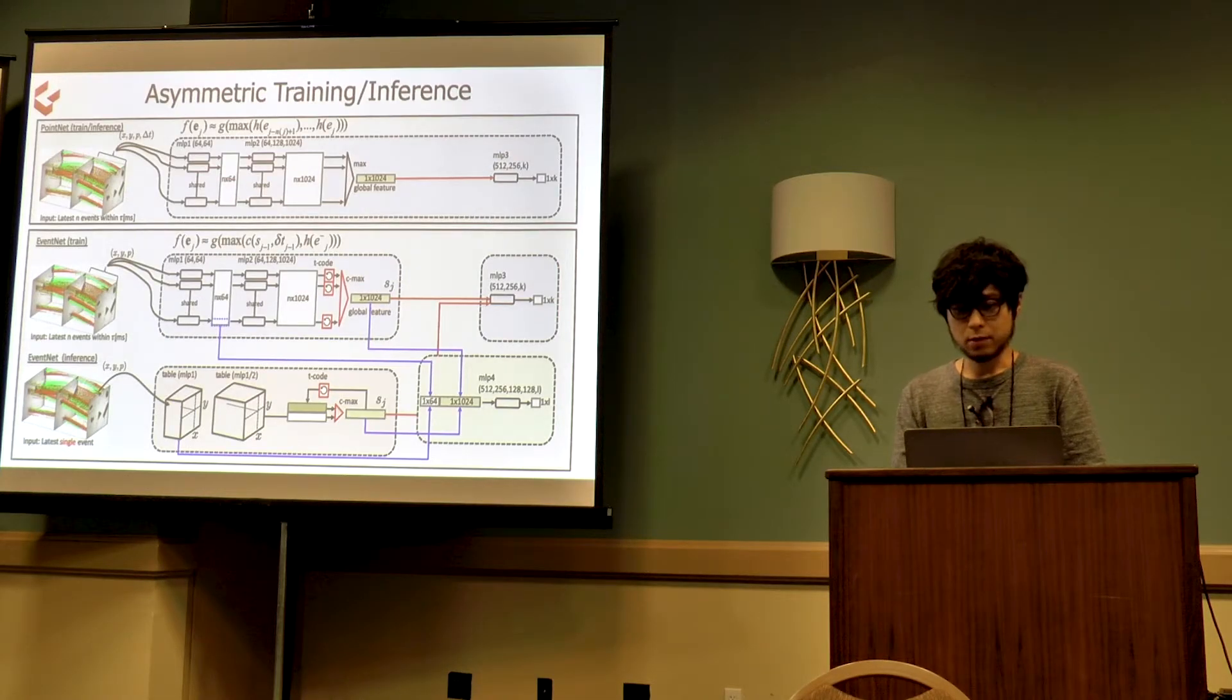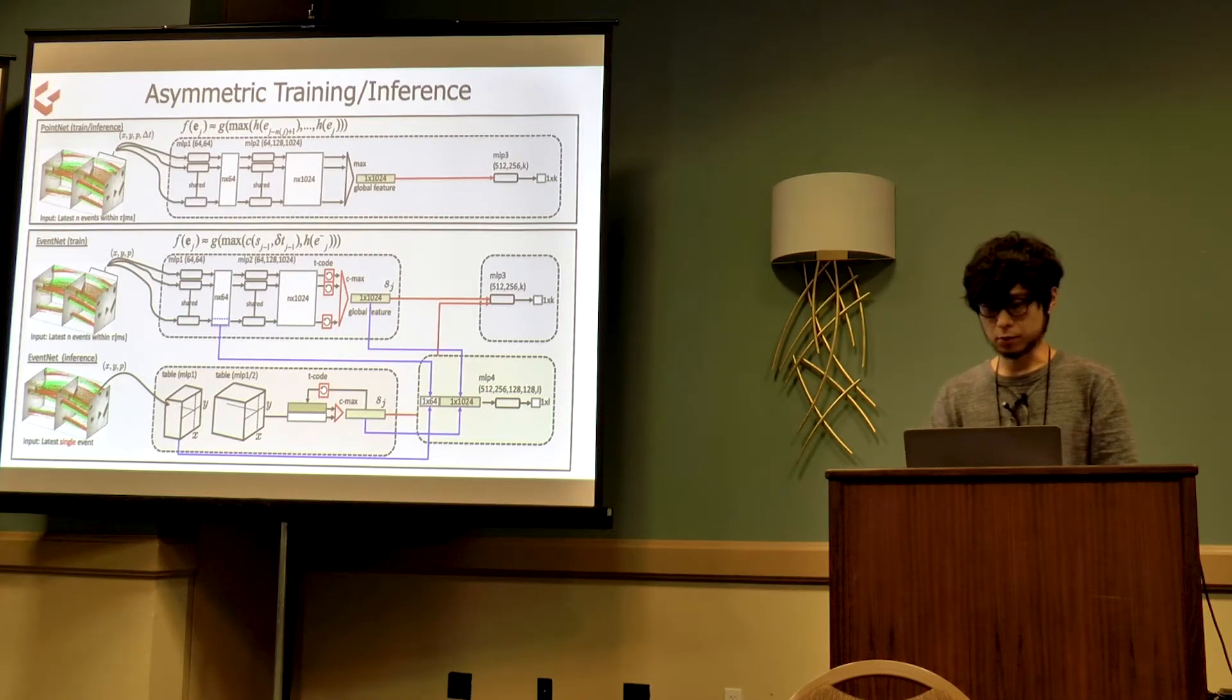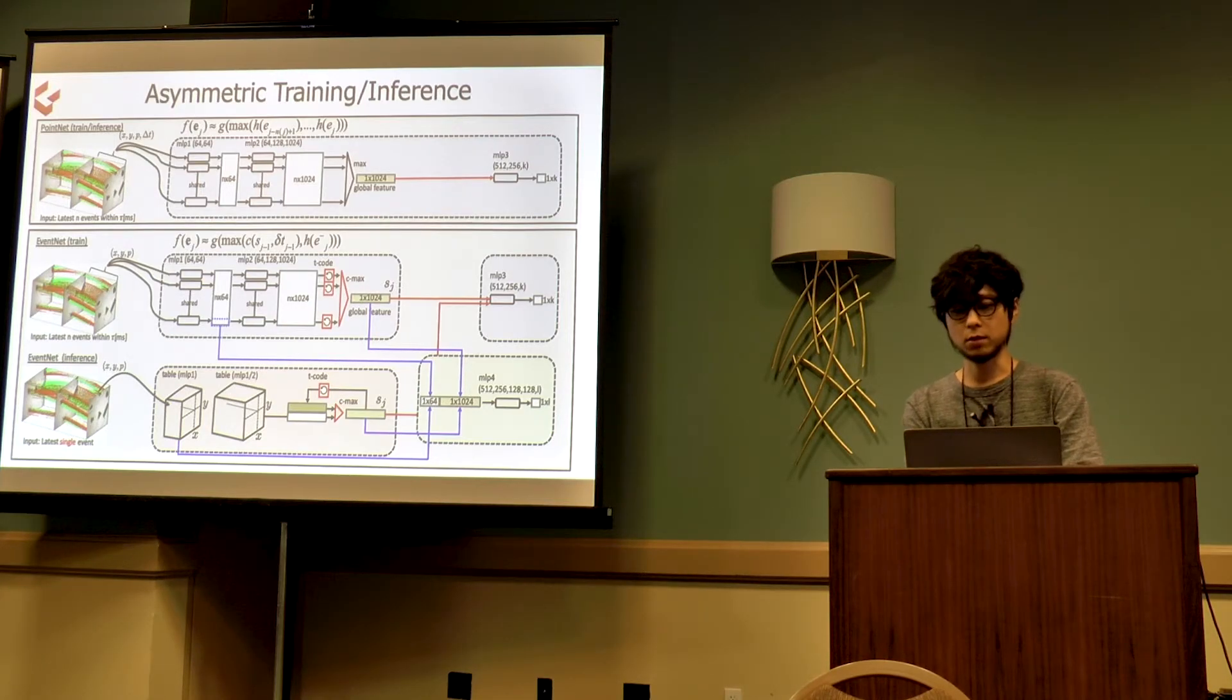The network structure of EventNet differs in training and inference. In principle, EventNet can be trained recursively, but it does not allow use of batch normalization. We adapted the batch structure in training to utilize batch normalization and also accelerate the training with parallelization.